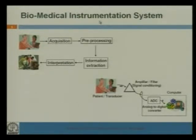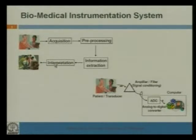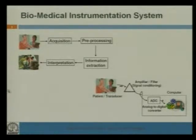This is a biomedical instrumentation system. In a biomedical instrumentation system, there may be ECG signals, and after that a data acquisition system is there for pre-processing. After getting the signal from the ECG, the information extraction and some interpretation will happen. After getting the ECG signal, there will be an amplifier or filter, and after that there will be digitization of those analog signals.